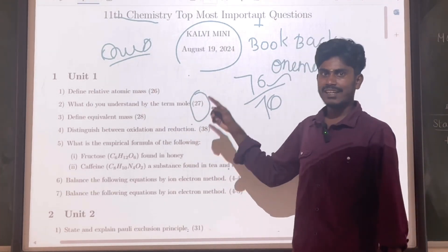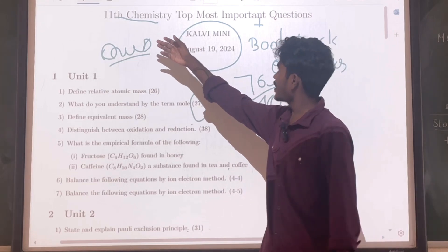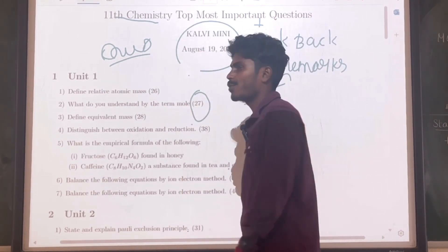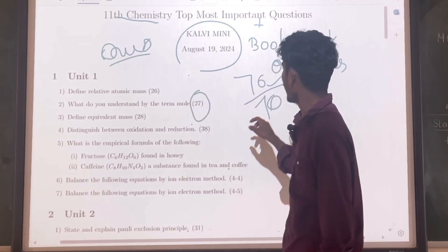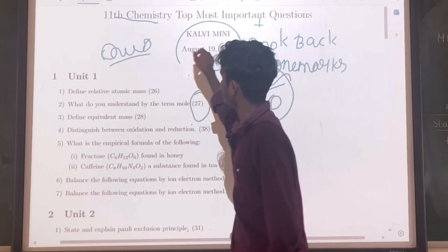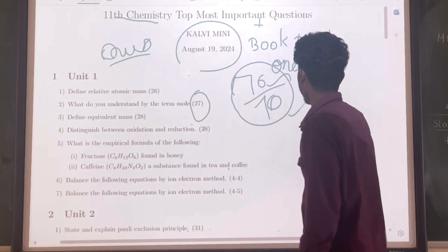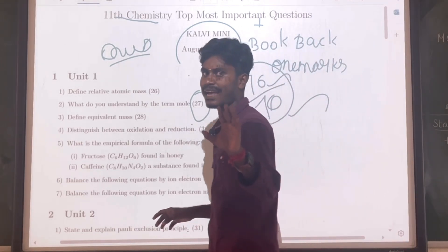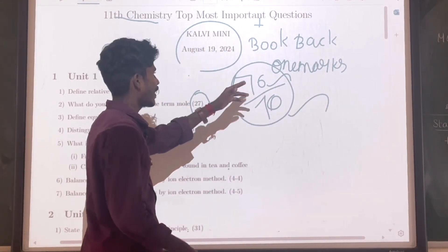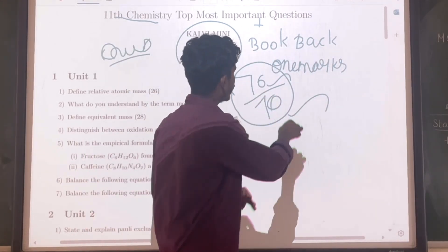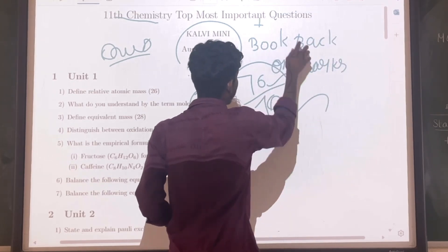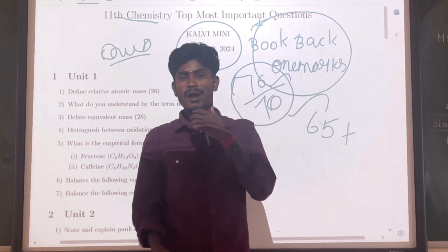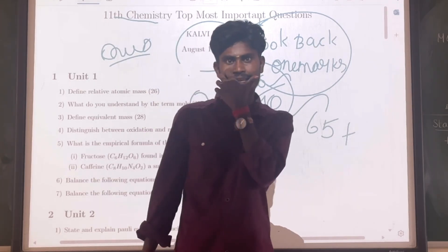Welcome again. In this video we will look at the top most important questions for quarterly examination in 2024 — 70 out of 70. If you look at it, you will see 2 mark, 3 mark, 5 mark questions. Direct book back one word — if you look at the top most important questions you'll see 1 mark plus book back one word. The score will be 65 plus marks, and 5 mark questions will also have a chance from inside the book.